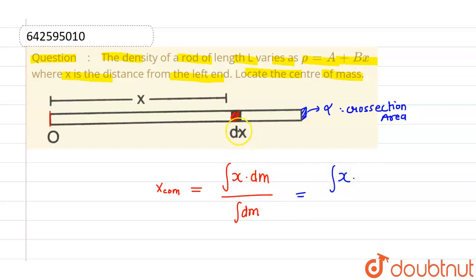And the mass of this particular element will be density into volume. So density is given as a plus bx and volume is nothing but cross section area into its length. So this will be alpha dx divided by integration of mass which is nothing but again volume into density. So volume is alpha dx into density is a plus bx.